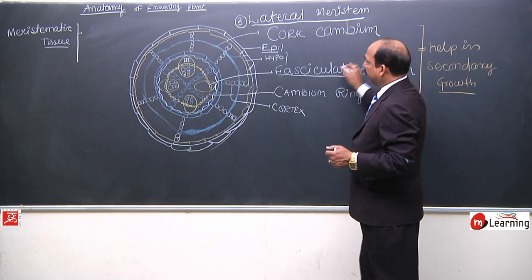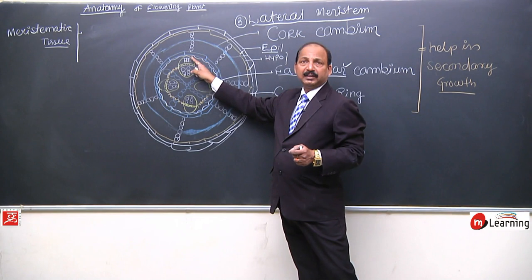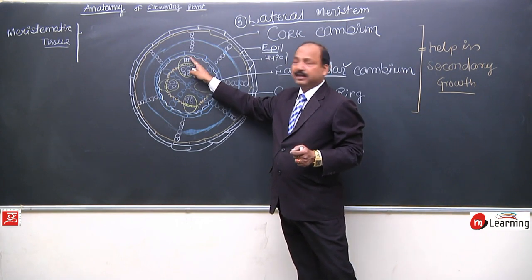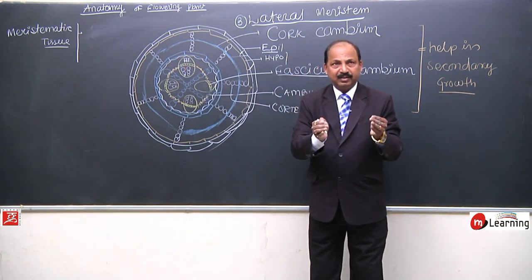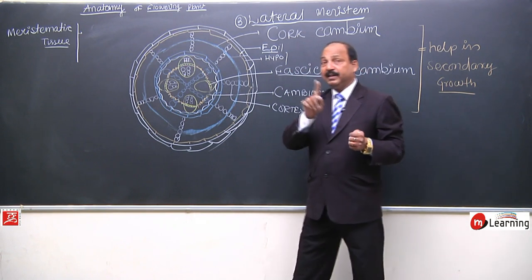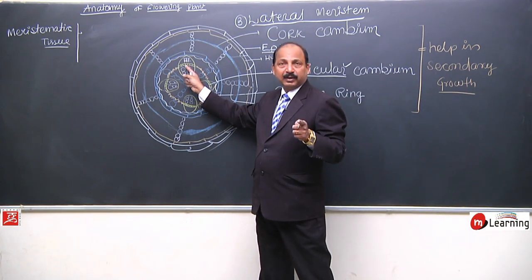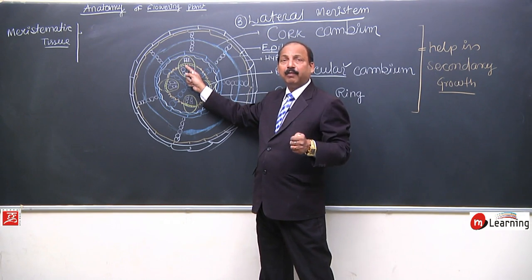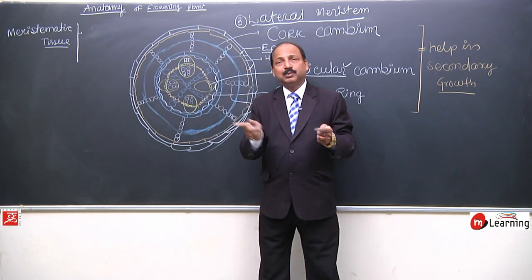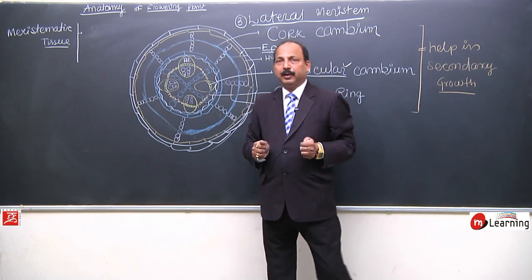So in lateral meristem, the first example is done. Between xylem and phloem, the meristematic tissue found there was named fascicular cambium. Fascicular cambium is also lateral in origin. But if asked on the basis of origin, fascicular cambium is primary in origin. This means it is an example of primary meristem. But position-wise, it is an example of lateral meristem.